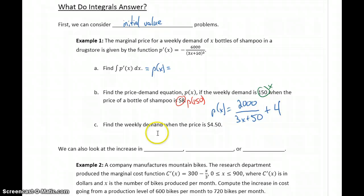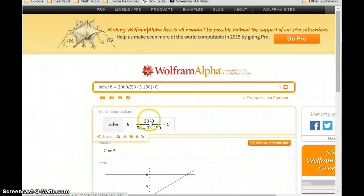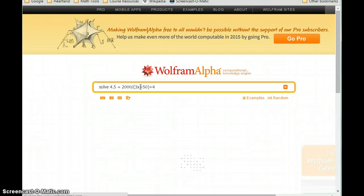So now that we have that original price demand function, we can evaluate it for different values of x, or similarly, we can solve if what we're given is a price. So we want to find the weekly demand when the price is $4.50. So we want to solve 4.5, so that's the price information that we do know, equal to 2,000 divided by 3x plus 50 plus 4. So this is our price demand function, set equal to a price of 4.5, we want to find out what demand will be at that price level.